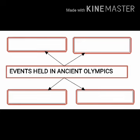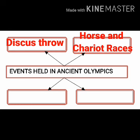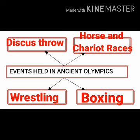Now read the sixth web: events held in ancient Olympics. This question can also be asked as 'Greek sports,' so remember that very well — if it is asked for Greek sports or ancient Olympics, the answer is one and the same. Write in the first box discus throw. In the second box write down horse and chariot races. In the third box write down wrestling. And in the fourth box write down boxing. These are the ancient Olympic games held in Greece.